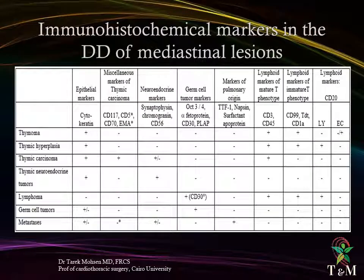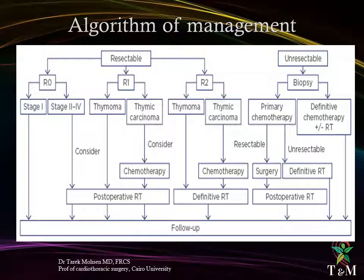Different immunohistochemical markers have been used to differentiate between mediastinal lesions; this table shows some of the markers used and their presence or absence in different mediastinal masses. In the management algorithm for thymoma according to resectability: resectable tumors with R0 resection — Stage 1 requires follow-up; Stage 2 to 4 should receive post-operative radiotherapy. For R1 resection, post-operative radiotherapy is considered; thymic carcinoma pathology warrants chemo- and radiotherapy. Resectable R2 masses follow the same role as R1. Unresectable masses undergo biopsy first, then primary chemotherapy; if downstaging is achieved, surgery can be applied followed by radiotherapy; otherwise chemo-radiotherapy is given and lifelong follow-up is maintained.